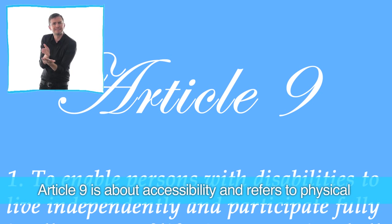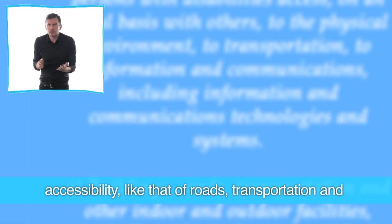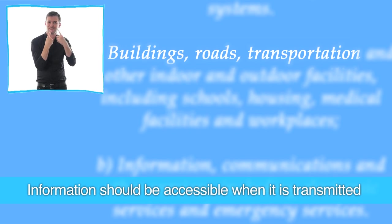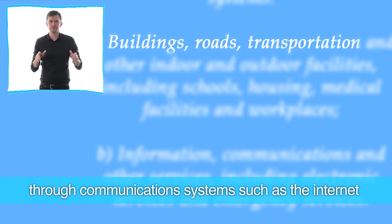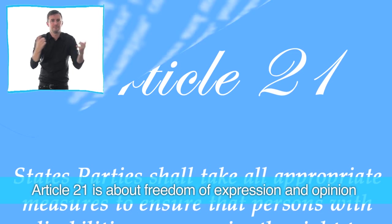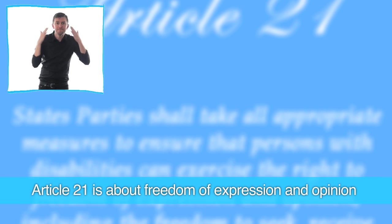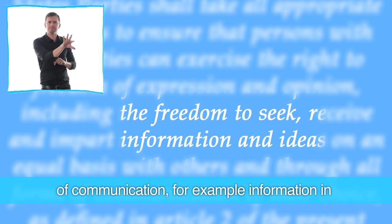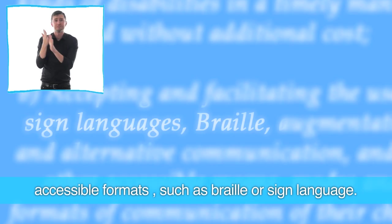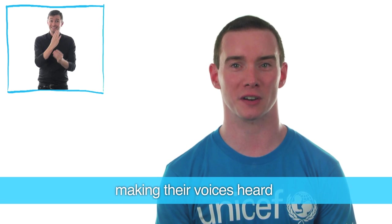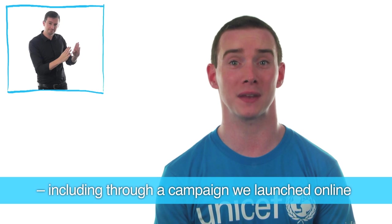Article 9 is about accessibility and refers to physical accessibility — like that of roads, transportation and buildings — as well as the accessibility of information. Information should be accessible when transmitted through communication systems such as the internet, and it is particularly important in emergencies. Article 21 is about freedom of expression and opinion and access to information. It explains the right to access and share different forms of communication — for example, information in accessible formats such as braille or sign language. In line with the UN Convention on the Rights of the Child, children and youth with disabilities are making their voices heard, including through a campaign called One Minutes Junior.